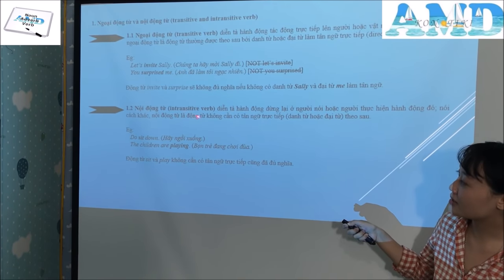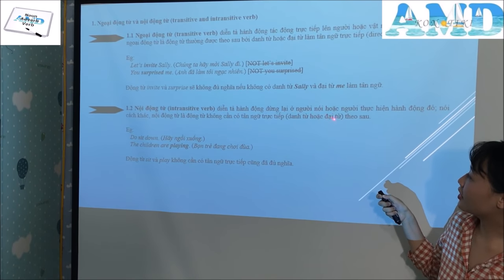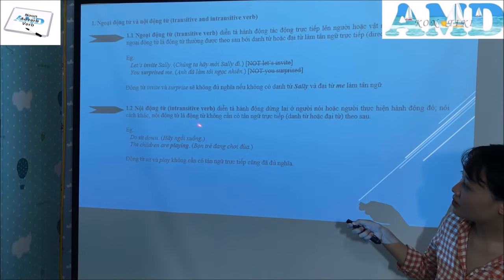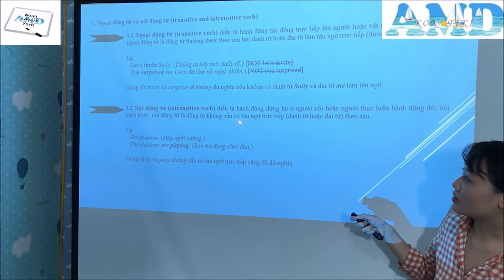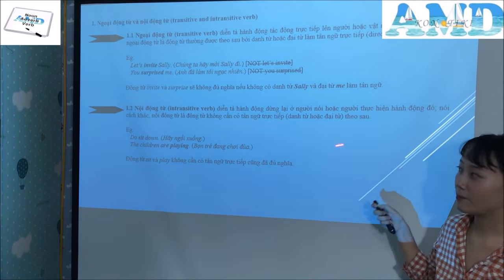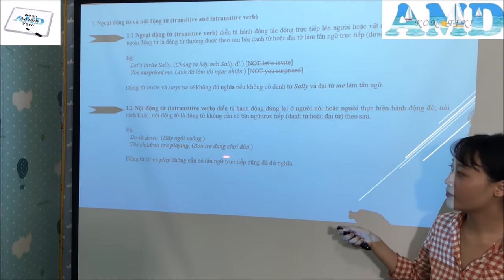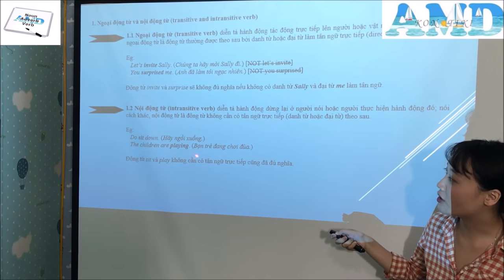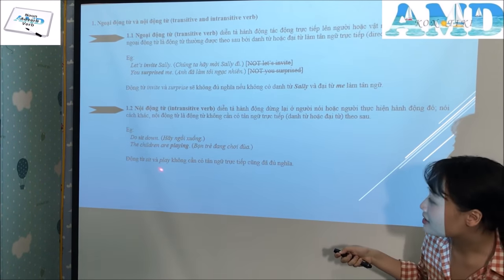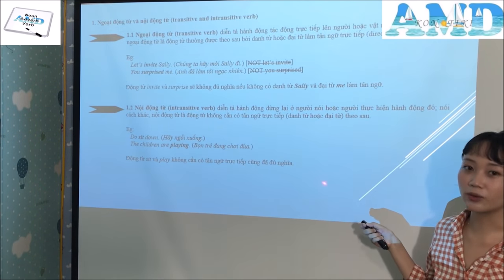An intransitive verb describes an action that stops at the subject — the person performing the action — or in other words, an intransitive verb does not need a direct object, noun, or phrase following it. For example: 'Do sit down.' 'The children are playing.' The verbs sit and play do not need a direct object or phrase.